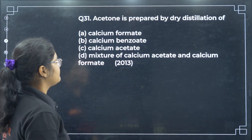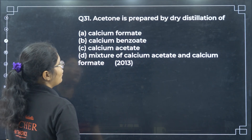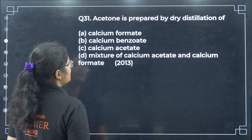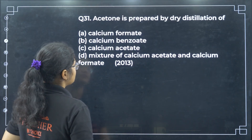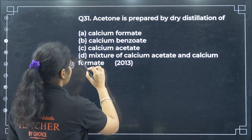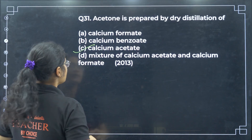Acetone is prepared by dry distillation of calcium acetate — option previously discussed.